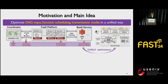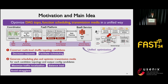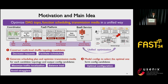On the contrary, our main idea is to optimize the DAG topology, function scheduling, and transmission media in a unified way. The following diagram shows the prototype framework. First, the topology optimizer constructs multi-level shuffle topology candidates to decrease data passing requests and makes the topology sparse to facilitate scheduling. Second, the function scheduler generates scheduling plans and optimizes transmission media for each candidate topology to maximize traffic localization, balance load, and avoid stragglers. Finally, it outputs configuration candidates. Last, the configuration modeler selects the optimal one from the config candidates.